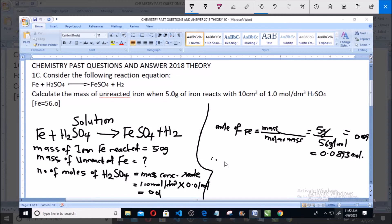Therefore, number of moles of unreacted iron is equals to 0.089 minus 0.01, which is equals to 0.079 mole.